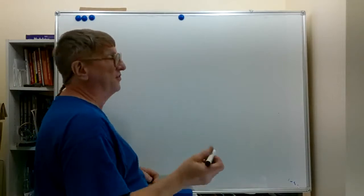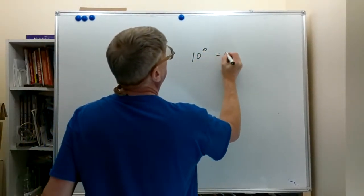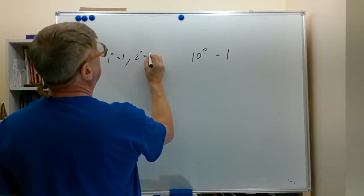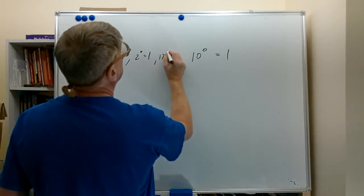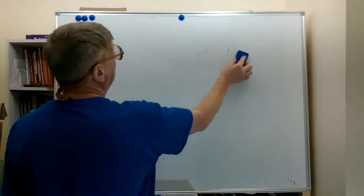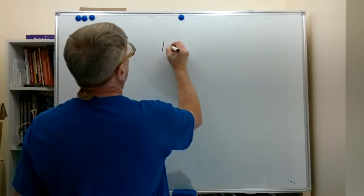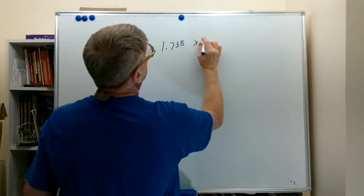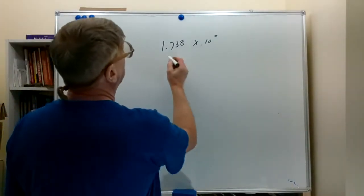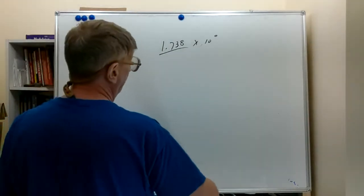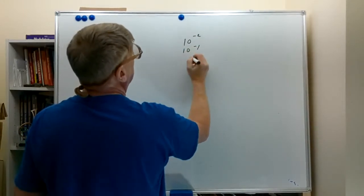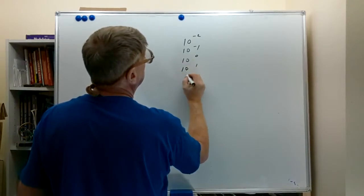Let's talk about powers of 10. First of all, 10 to the 0 equals 1. As a matter of fact, any number raised to the zero power equals 1: 1 to the 0 equals 1, 2 to the 0 equals 1, 17 to the 0 equals 1. So if I give you 1.738 times 10 to the 0, since 10 to the 0 equals 1, and multiplying by 1 doesn't change anything, that's simply 1.738. We'll look at 10 to the minus 2, 10 to the minus 1, 10 to the 0, 10 to the 1, and 10 to the 2.